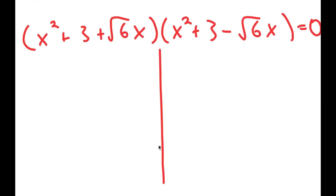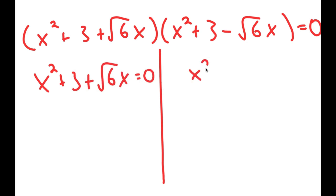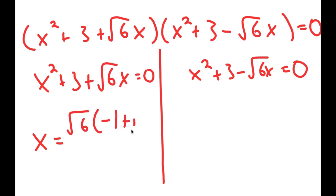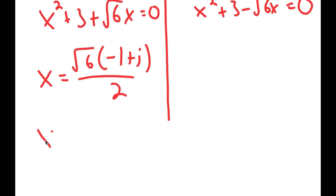So this gives me two equations. I have x squared plus 3 plus the square root of 6 times x equals 0, and x squared plus 3 minus the square root of 6 times x equals 0. Because both of these are quadratic equations, you can use the quadratic formula to solve them. You should get that x is equal to the square root of 6 times negative 1 plus i, over 2, and x is also equal to the square root of 6 times negative 1 minus i, over 2.